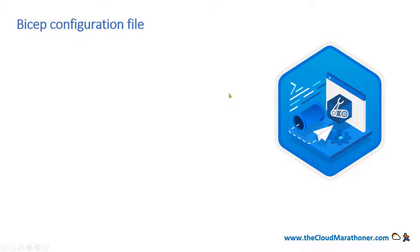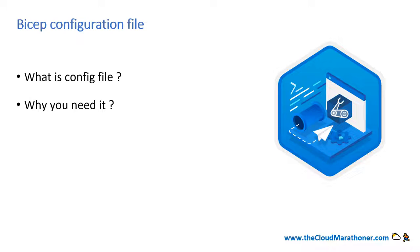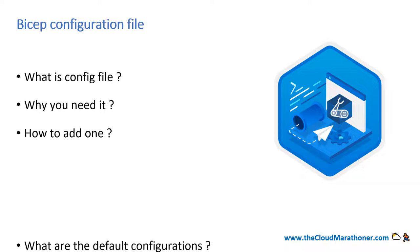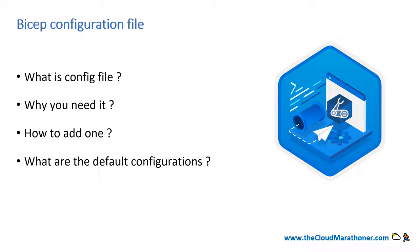Now let's look into the Bicep configuration file, because that's the main focus today. I'll provide a link to learn more about getting started with Azure Bicep, but today we're going to focus on how we can customize the configuration of Azure Bicep using this config file — what it is, how to create one, why we need one, what benefits and flexibility it brings to our coding style or compliance, how to add one, and what default configurations are available right out of the box.